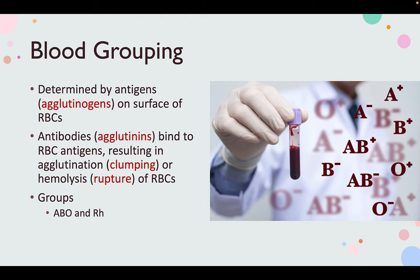Antibodies bind to these antigens, resulting in agglutination or hemolysis of red blood cells — clumping or rupture of them. We don't want that. There are different groups: the ABO group and the RH group.